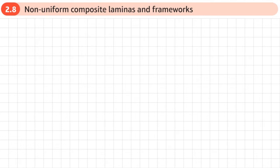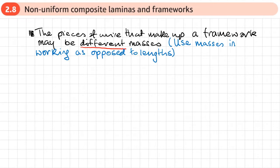This is the eighth and final section of chapter two, on non-uniform composite laminas and frameworks. If we're talking about a framework, the pieces of wire may be of different masses, so when we do our working we use the mass of the wire as opposed to its length. You'll just be given masses, and if you're given lengths then you just ignore them.